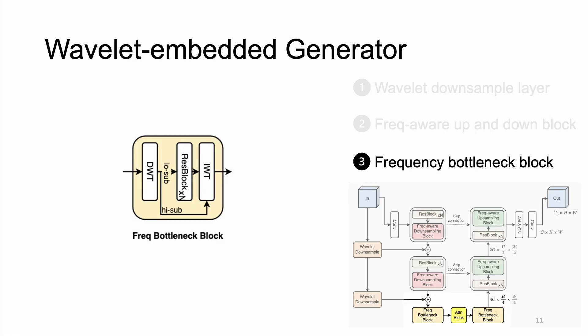Finally, we introduce a frequency bottleneck block to aid the learning of intermediate features of low-frequency subbands. It also helps preserve high-frequency details. Specifically, the input features are first divided into low and high subbands, where only low subbands are processed by ResBlock. The processed features and the original high-frequency subbands are transformed back to the original space via inverse wavelet transform.